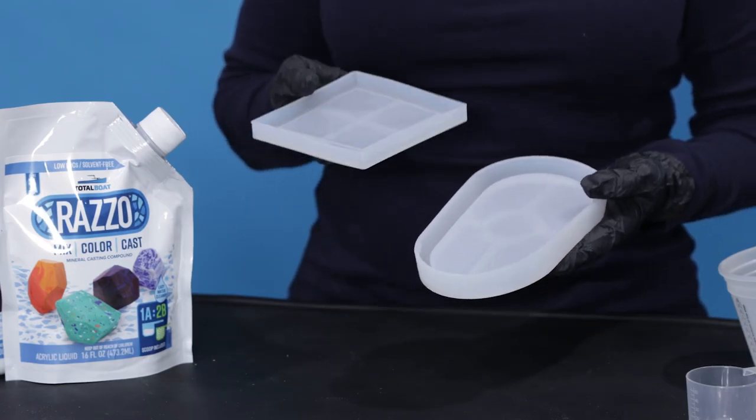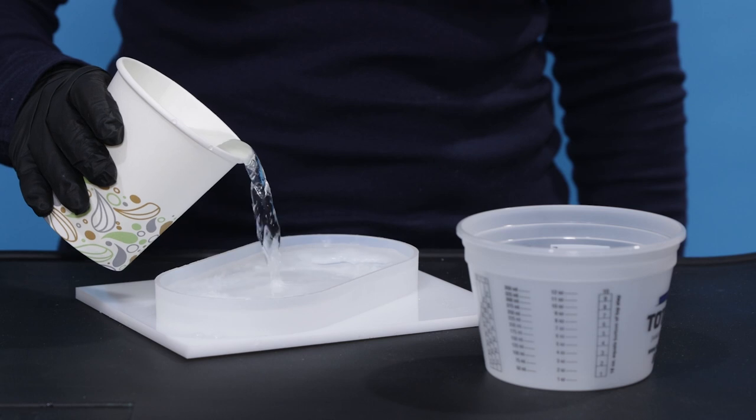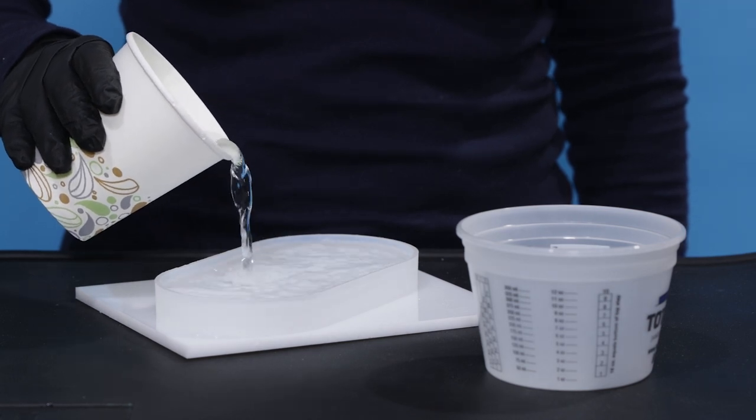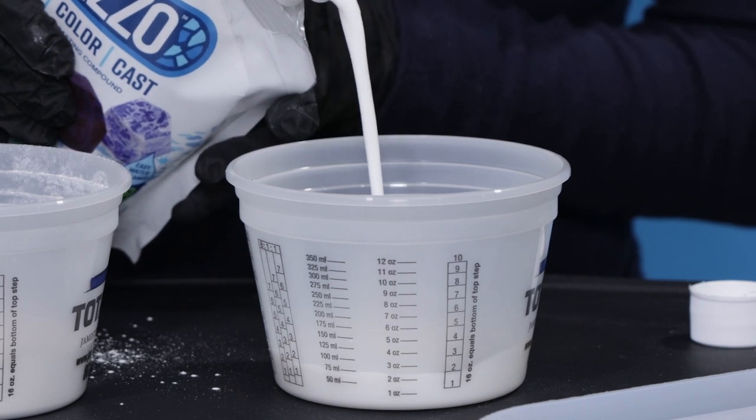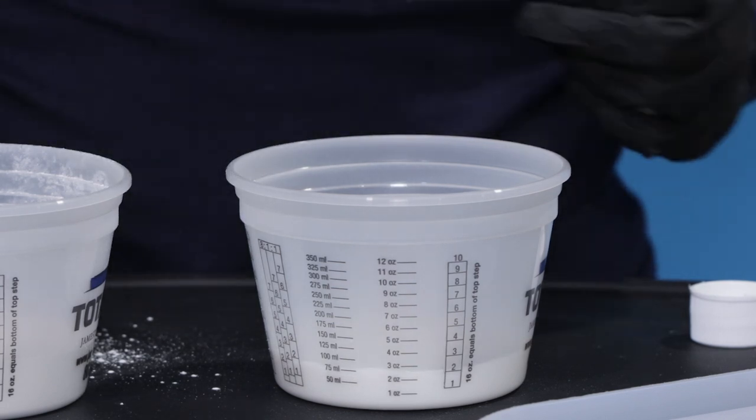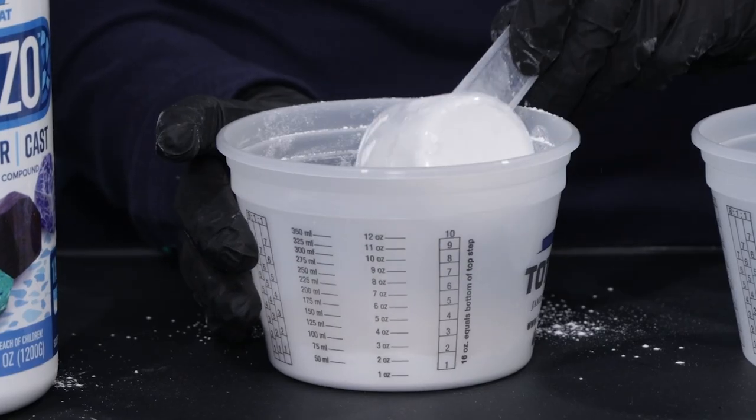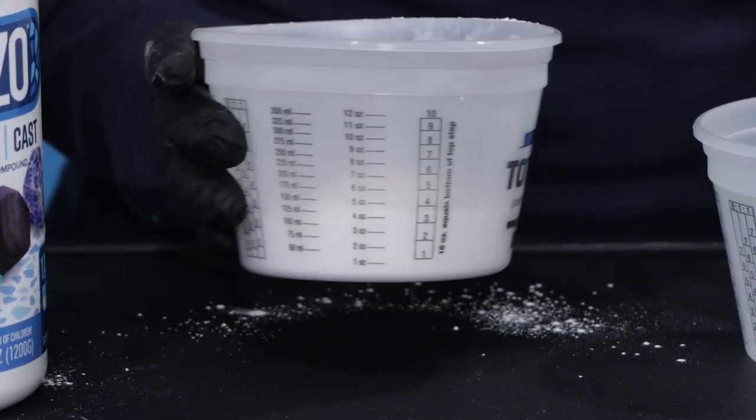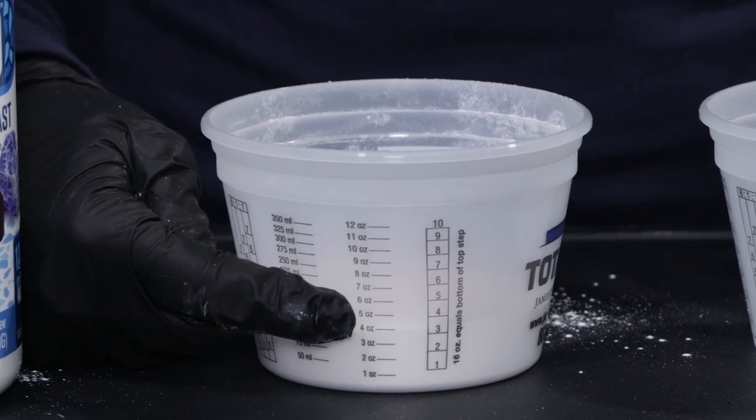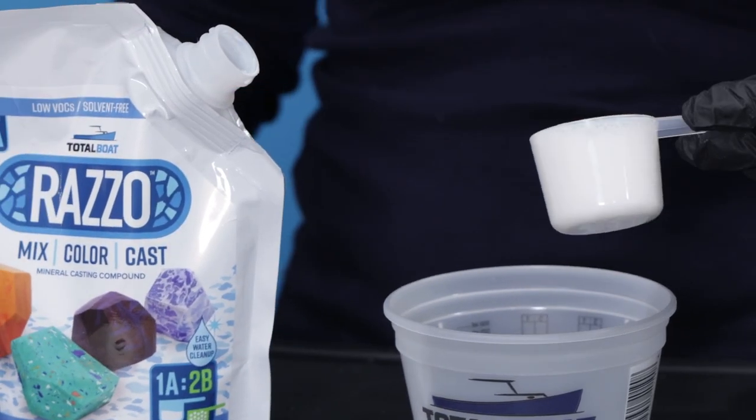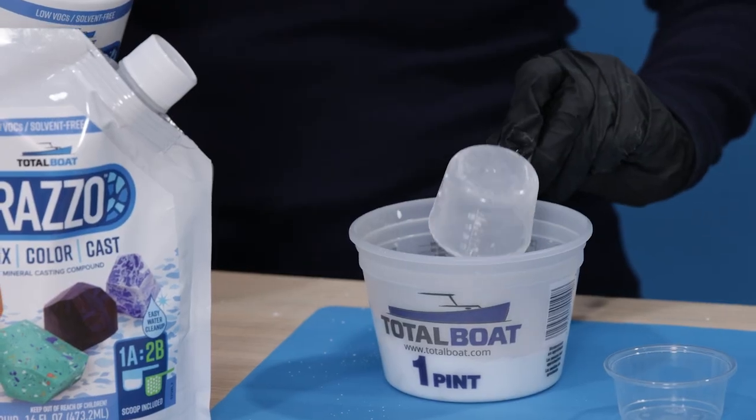First decide what you want to create and determine how many fluid ounces are needed to fill that mold. We need about four fluid ounces, so we'll use two ounces of Part A liquid and four ounces of Part B powder. Your powder volume should roughly equal the volume of Razzo that you want to make. Always make sure to mix one part liquid with two parts powder.